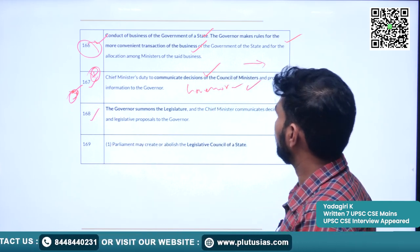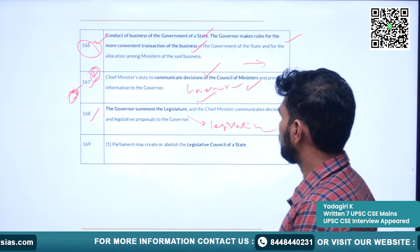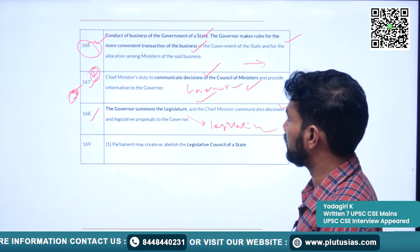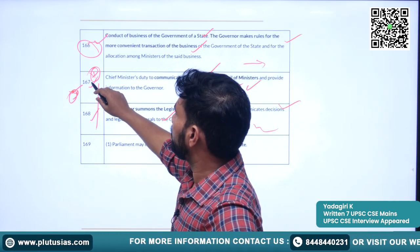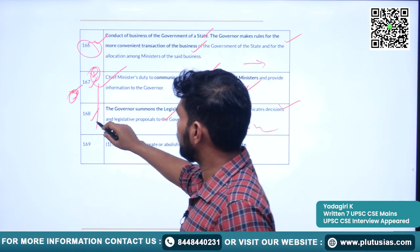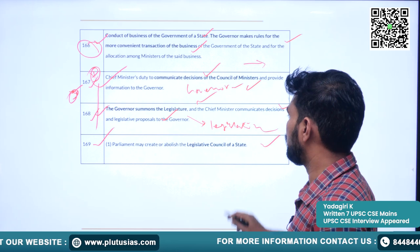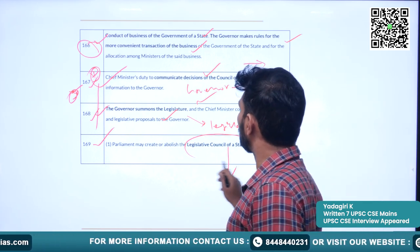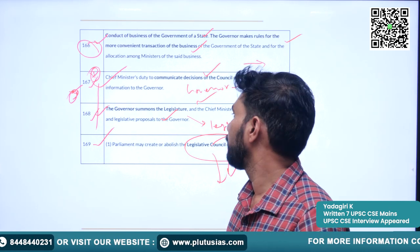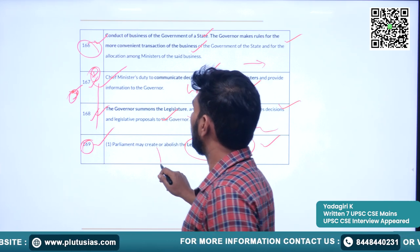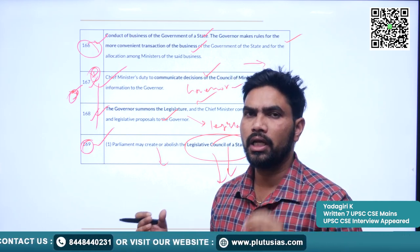Article 167 defines the duty of the chief minister to communicate decisions of the council of ministers to the governor — this also defines the relationship between the governor and chief minister. Article 168 talks about the legislative powers of the governor — the governor summons the legislature and the chief minister communicates legislative proposals to the governor. Article 167 covers administrative aspects and 168 covers legislative aspects. Article 169 says parliament may create and abolish the legislative council of a state.